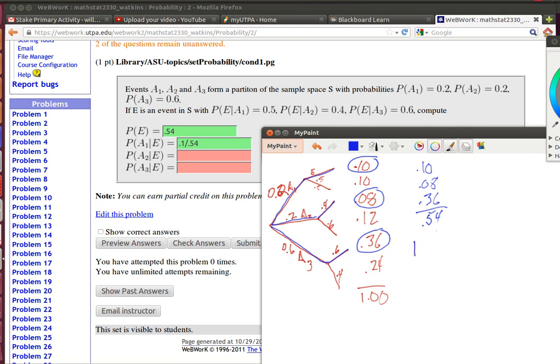We're worried about the probability of getting A1 given that we've had the event E occur. Now I'll need to use a formula here. The formula for a conditional probability is the intersection of these two probabilities: A1 and E divided by the probability of E.